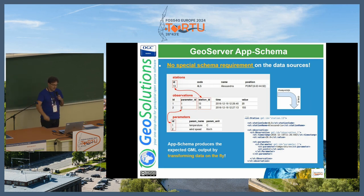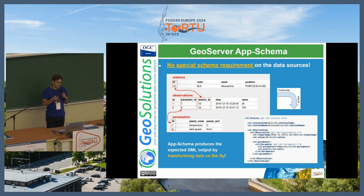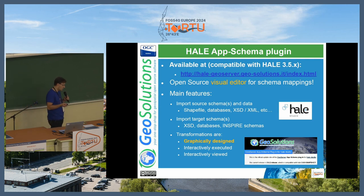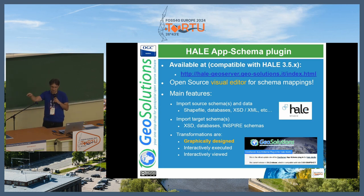For example, say I have a very simple situation with stations, observations, and observed parameters — a classic, very simple model. The mapping file would allow me to turn this relational database into that XML shown in the slide. Setting up the mapping can be a difficult experience, so there is a visual editor compatible with Hale 3.5 that allows you to create the mapping by dragging and dropping information from the source structure into the target one, and it generates the mapping files for you.